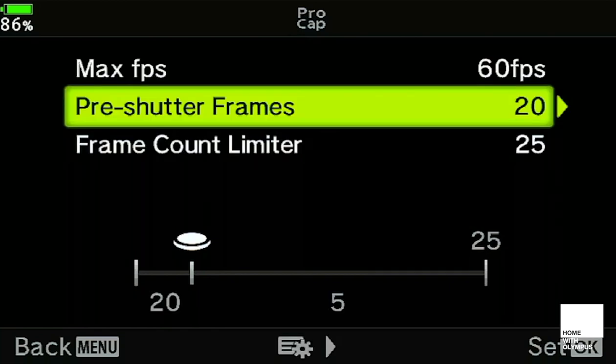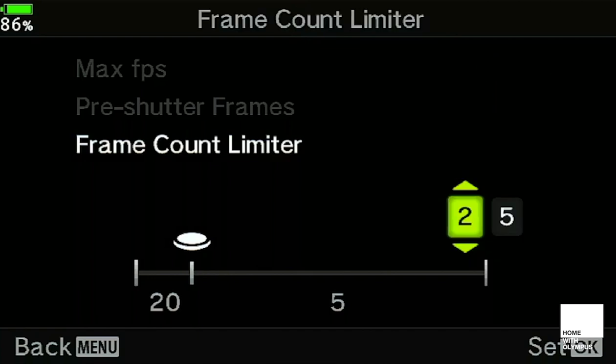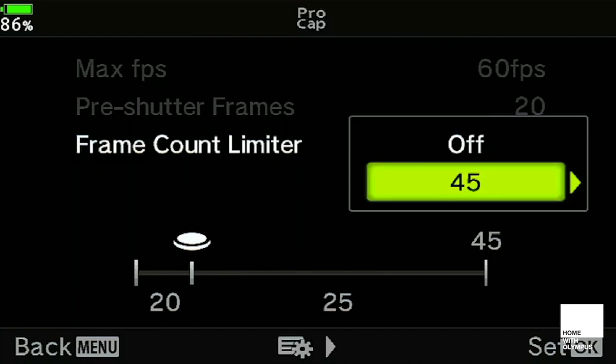Once I've done that, I've got a frame count limiter—this is the total shots including the pre-shutter frames, so the ones before I press the shutter and everything after—and I'm going to set that up to 45. That seems like a lot, but this is 60 frames per second, so we're going to need all of those shots to get a good one.